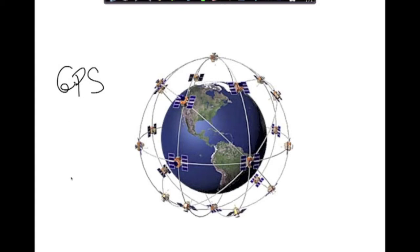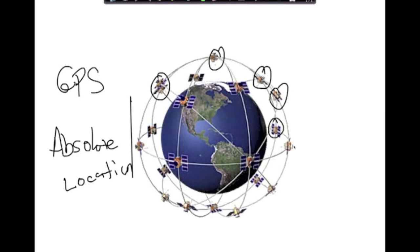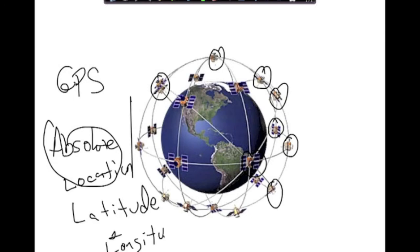Basically all you need to know about this is that global positioning finds your absolute location using satellites. It uses all these satellites, and it needs at least 24 of these satellites to function correctly. It pinpoints your absolute location by finding your latitude and longitude. So that's GPS, Global Positioning System.